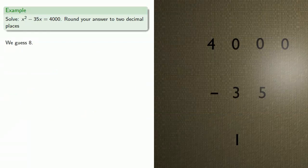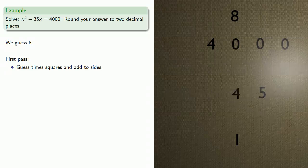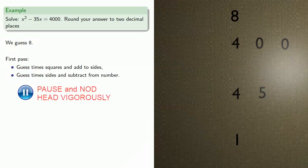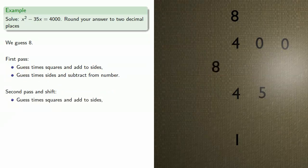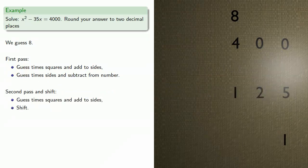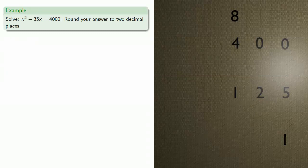So we guess 8. On our first pass, guess times squares and add to sides. Then guess times sides and subtract from number. For our second pass, guess times squares and add to sides, and shift. Notice that our coefficient is now positive.